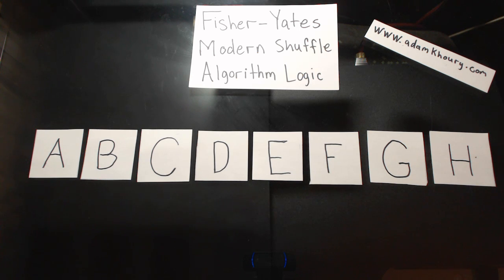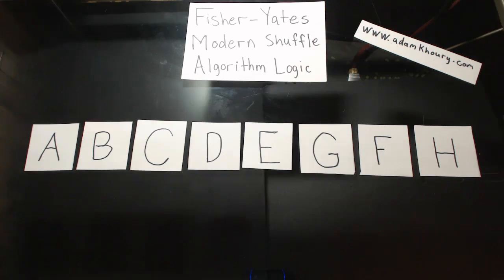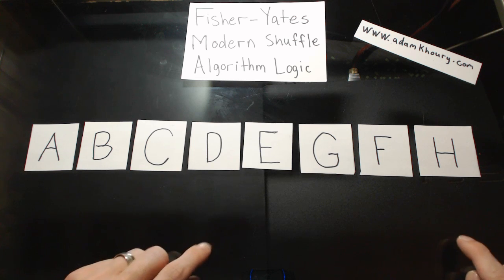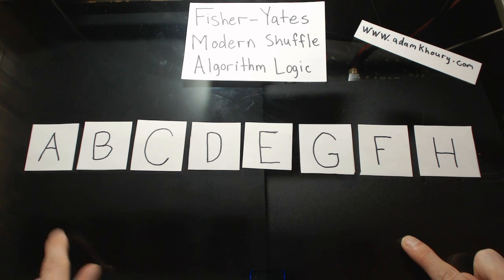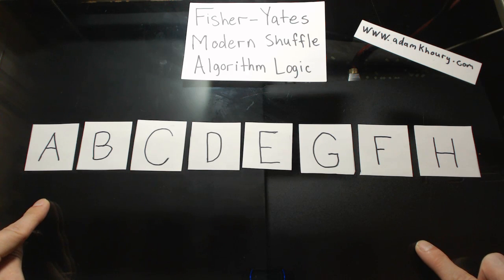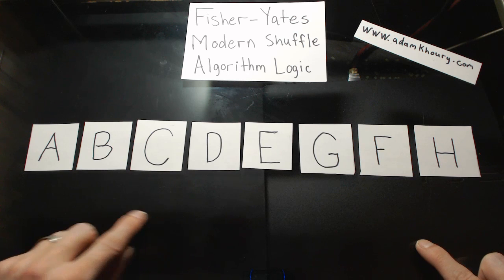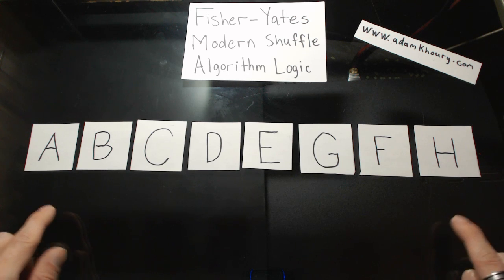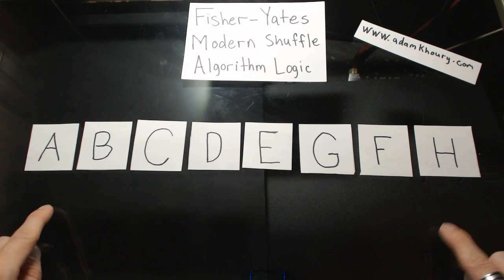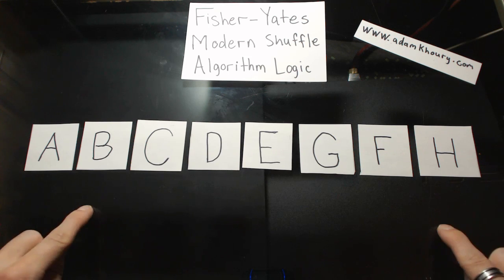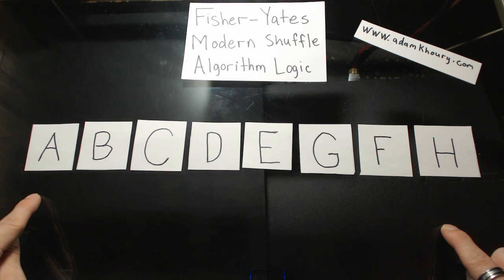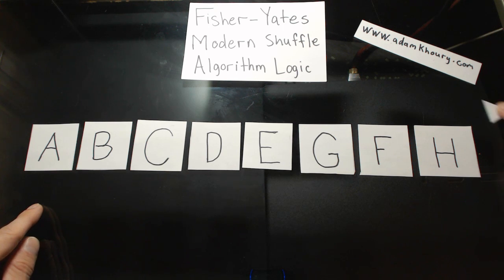Having this visual aid first will help you in understanding exactly how the algorithm is going to run. According to the Fisher-Yates Modern Shuffle algorithm, we should loop from back to front over this array, bypassing index position zero. So we have eight elements in our array. According to the Fisher-Yates Modern Shuffle logic, it is only supposed to run seven times — you bypass index position zero within your loop.